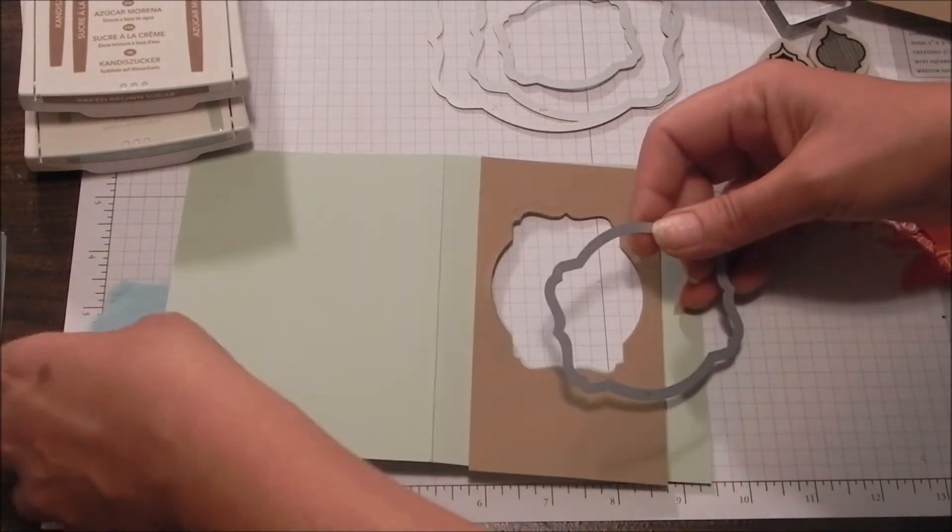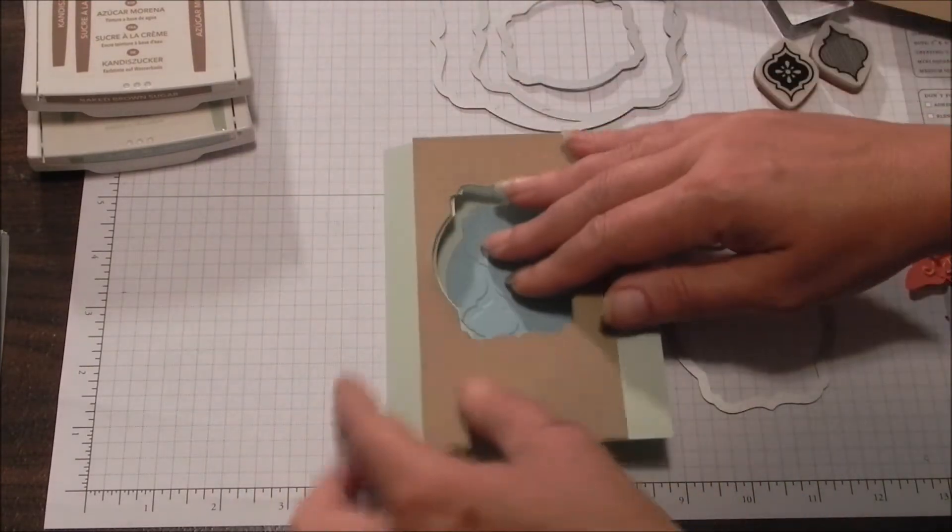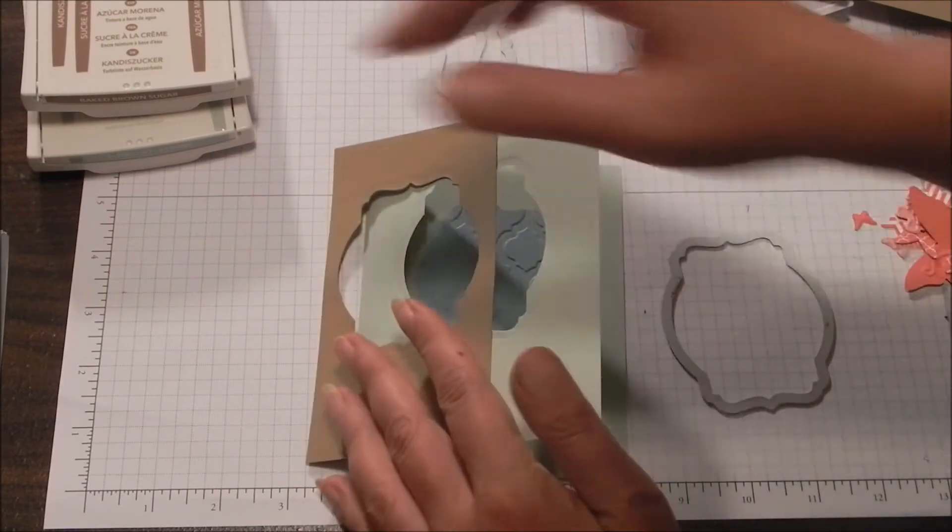And the last thing you're going to want to cut out is coordinating color that's going to end up going on the inside of your card. And then run it through your embossing folder.